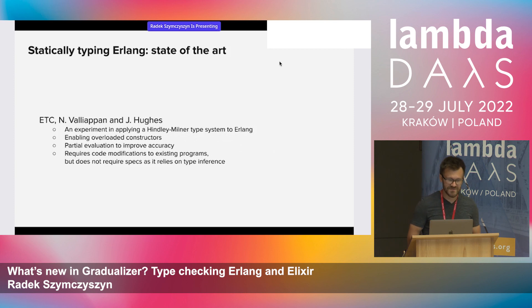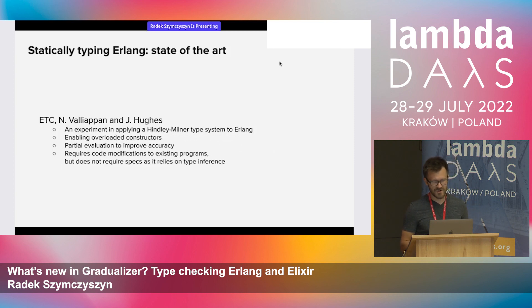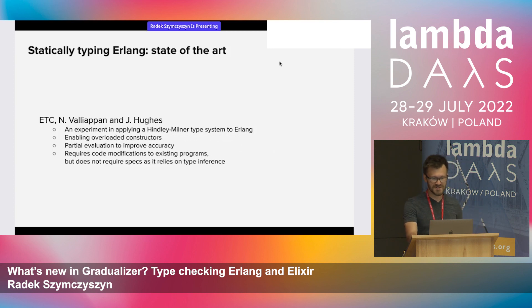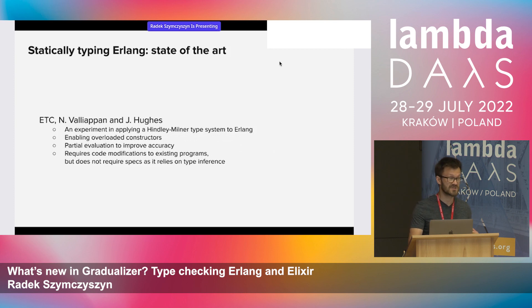Then we have ETC — Erlang Type Checker — developed by Nechi Valiapan and John Hughes, a research project applying a Hindley-Milner system to Erlang. It enabled overloaded constructors, which is uncommon in Hindley-Milner systems like Haskell or OCaml. They also utilized partial evaluation to improve accuracy. However, this system requires code modifications to existing programs — quite a lot of them — to use these constructors and wrap data into tagged tuples.